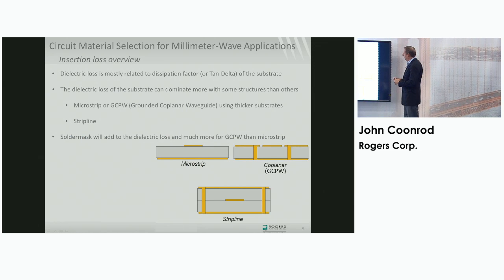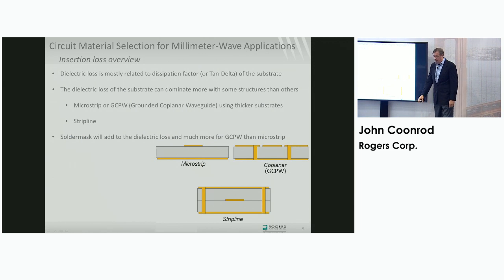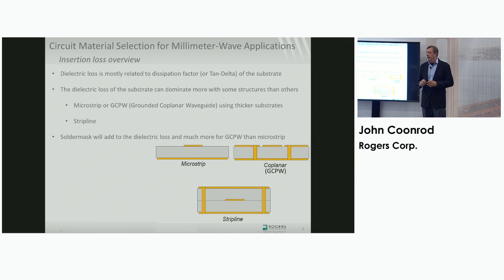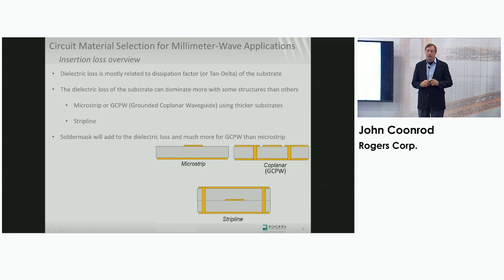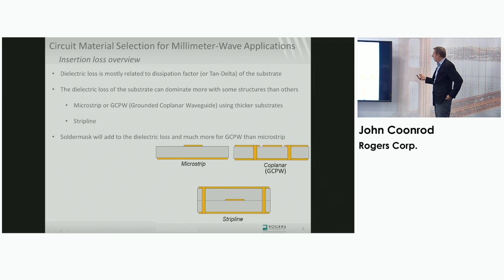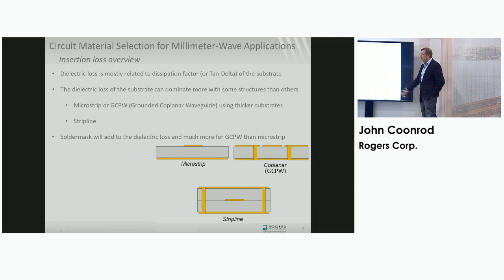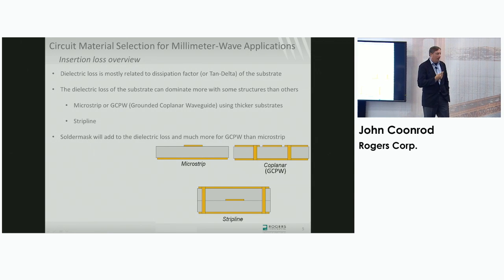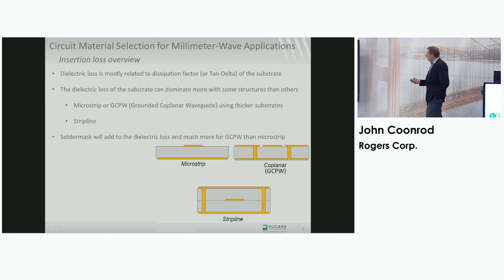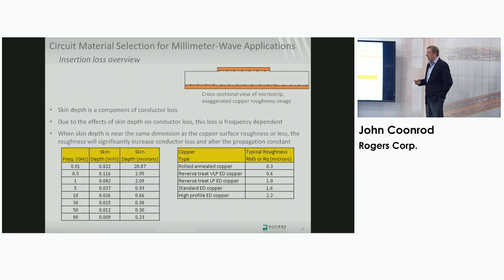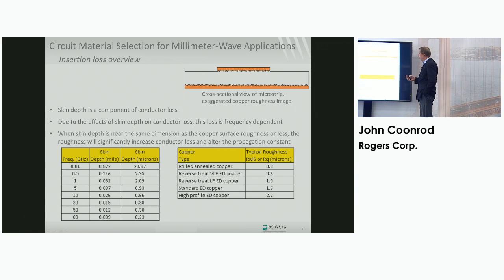Dielectric losses are mostly due to the dissipation factor, tan delta. Adding solder mask to a circuit adds to dielectric losses, and this is especially significant for a grounded coplanar waveguide. Adding ENIG or a plated metal finish adds to conductor losses. Conductor losses are frequency dependent, mostly due to skin depth. The higher the frequency, the thinner the skin depth, so conductor losses increase with frequency.